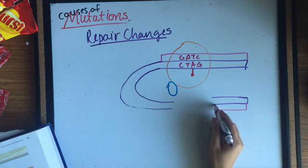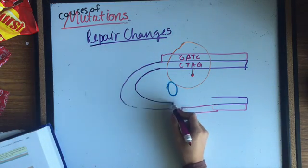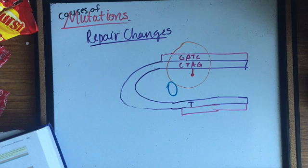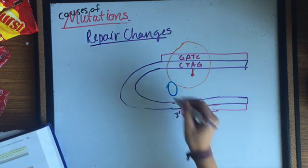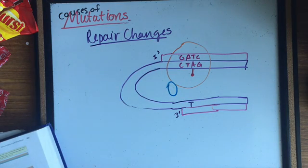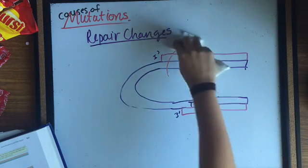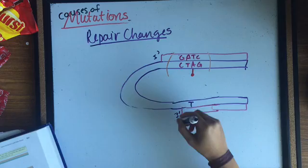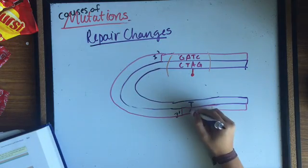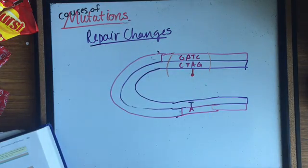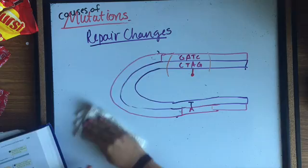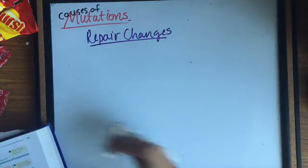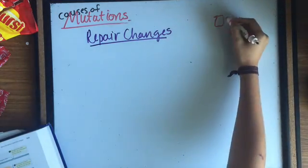Then exonucleases remove nucleotides on the new strand between the GATC sequence and the mismatch. And finally, DNA polymerase then replaces the nucleotides, correcting the mismatch and DNA ligase seals the nick in the sugar phosphate backbone. Many incorrectly inserted nucleotides that escape proofreading are corrected this way, by mismatch repair.